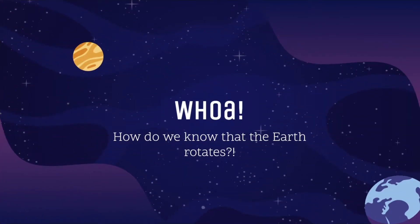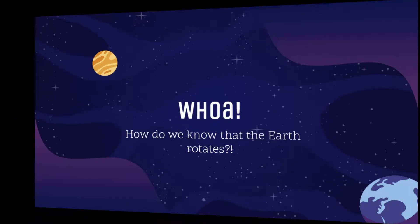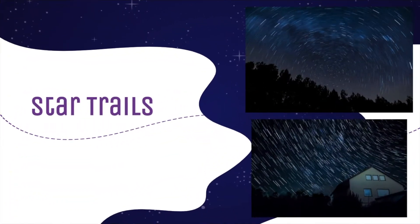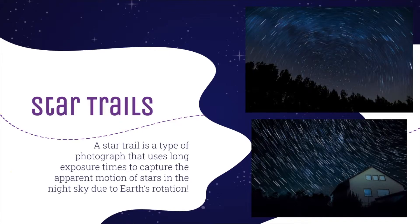How do we know that the Earth rotates? Well, there are several ways, and one of those is star trails. A star trail is a type of photograph that uses long exposure times to capture the apparent motion of stars in the night sky due to Earth's rotation.